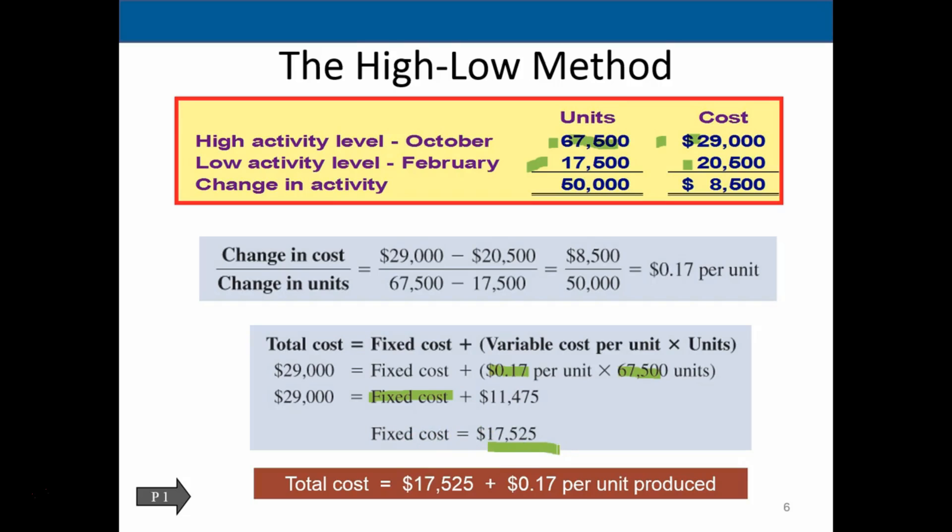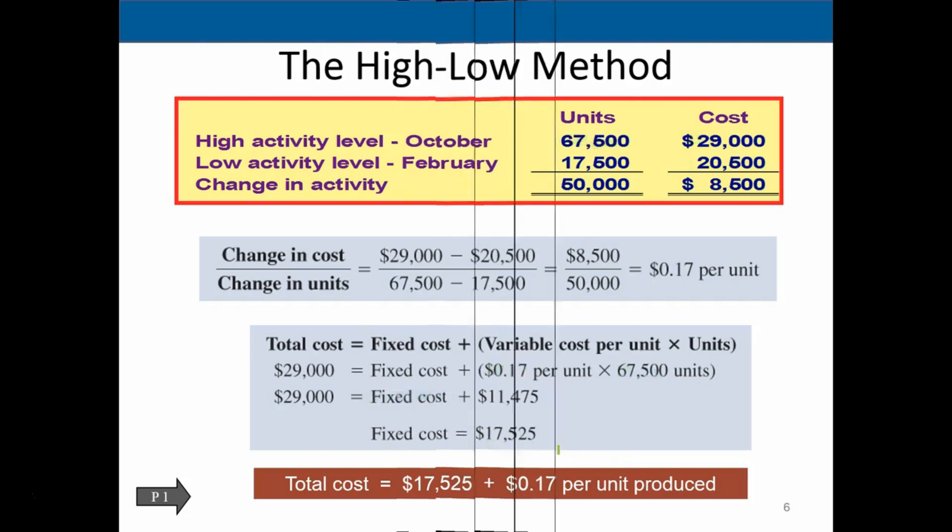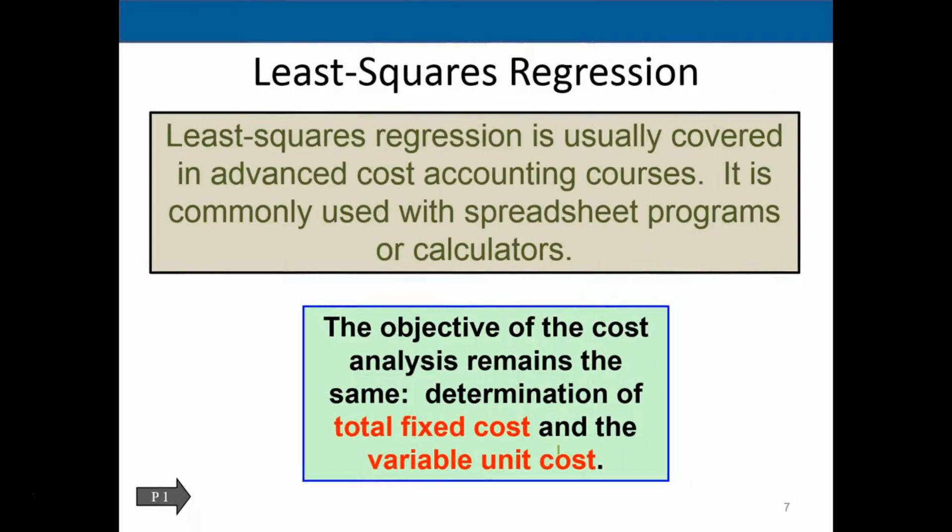So that's a way to kind of back into the behavior of the line if it's not known. And then we have the least square regression. The least square regression is usually covered in advanced accounting courses. It is commonly used with spreadsheet program or calculators. So the objective of the cost analysis remains the same: determination of the total fixed cost and the variable cost. So we're not going to calculate it right now.